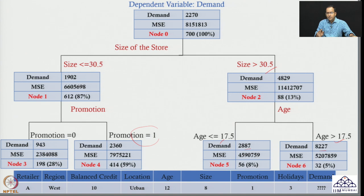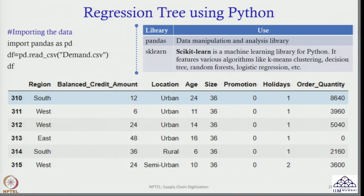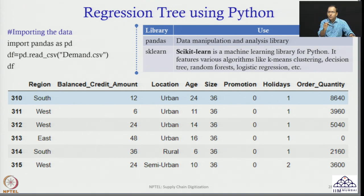In the last class, we explained the various managerial insights and how to interpret this tree in more detail. In today's lecture, we will focus on how to get this tree — previously we only focused on interpretation. Now, we will focus on how to obtain this tree using Python coding. Similar to the classification tree we saw in the maintenance problem, similar coding will be written for the regression tree.